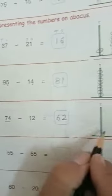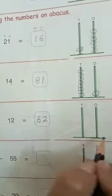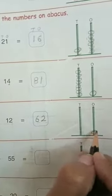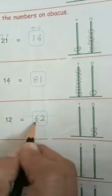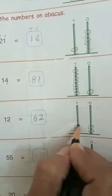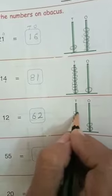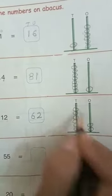Now we will show this answer on this abacus. 2 ones: 1, 2. 6 tens: 1, 2, 3, 4, 5, 6.